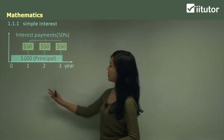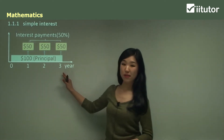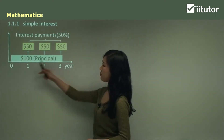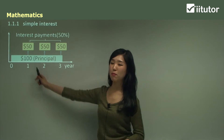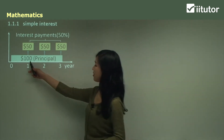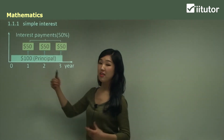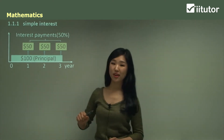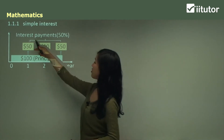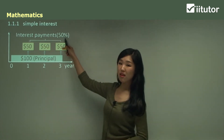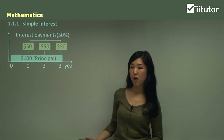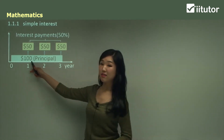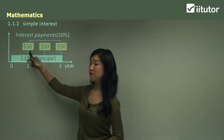In this diagram it shows a 1, 2, 3 year period and within that period we have a principal of $100. A principal is the initial amount — the value that we have at the very beginning of the period, which is $100. It says that interest payments are 50% per annum, which means per year. So 50% of $100 is simply $50.